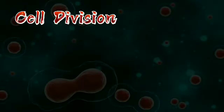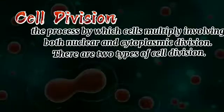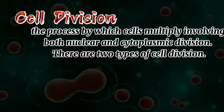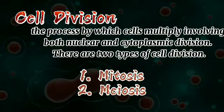A cell division is the process by which cells multiply, involving both nuclear and cytoplasmic division. There are two types of cell division. The first is mitosis and the second is meiosis. So now that you know what is a cell division and the different types, let's now begin by discussing the mitotic cell division.